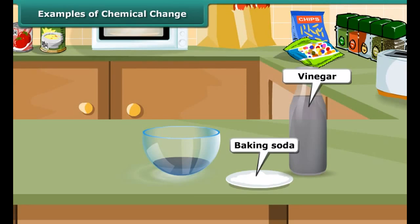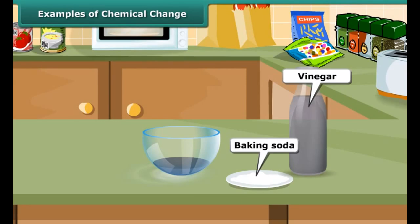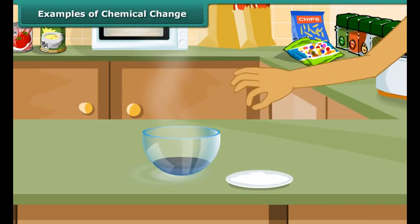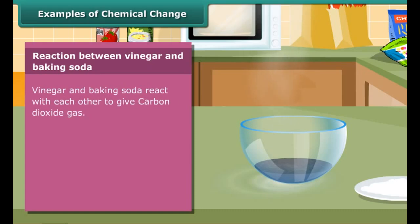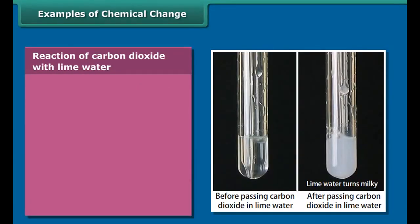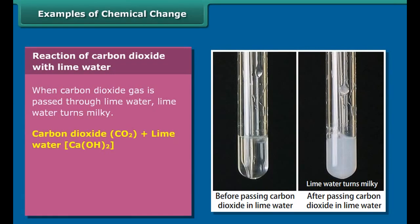Vinegar and baking soda are easily found in our kitchen. Take a little vinegar in a small bowl made of china clay. Add a pinch of baking soda to it. You will hear a hissing sound and see bubbles of gas coming out. The evolved gas is carbon dioxide. When this carbon dioxide is passed through lime water, the lime water turns milky.